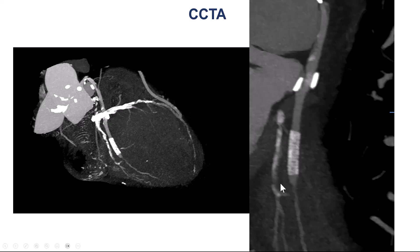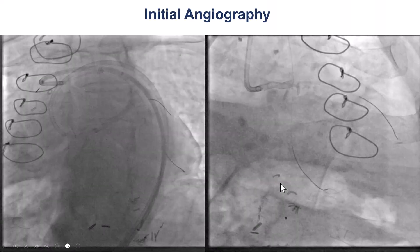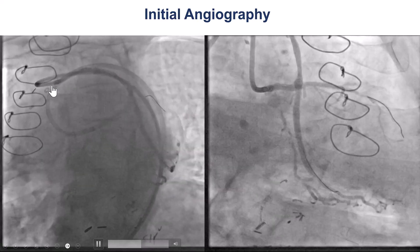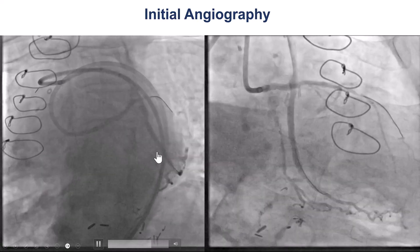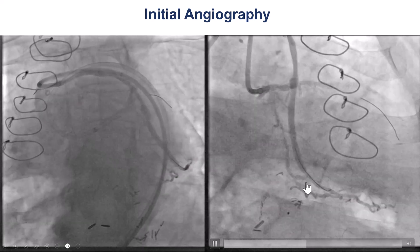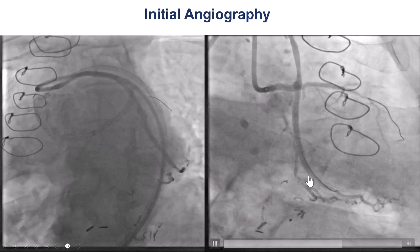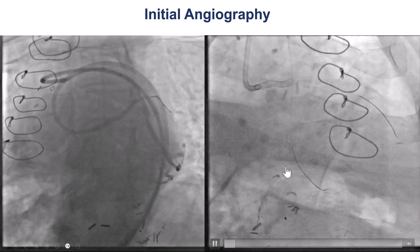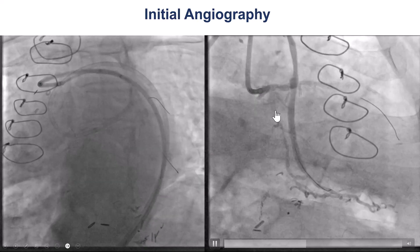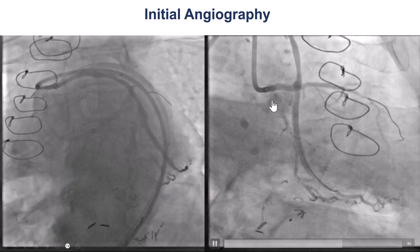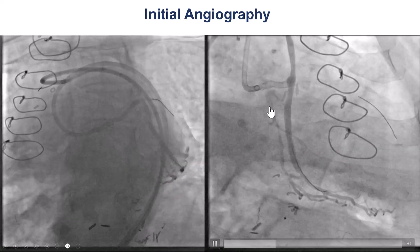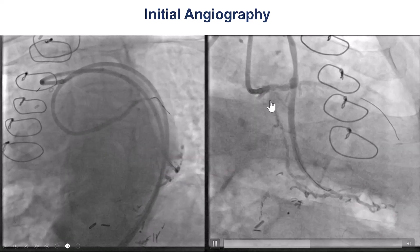This is the native circumflex. This is the coronary angiogram, showing the SVG to the obtuse marginal branch. There is an anastomotic lesion, especially proximal to the touchdown, and the circumflex fills retrogradely. And there is a gap between the left main and the circumflex.